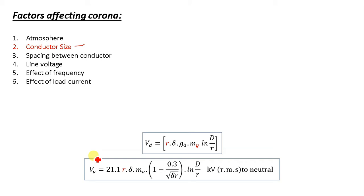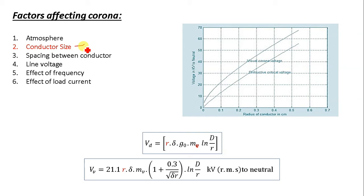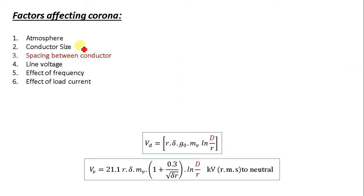In case of a stranded conductor — such as an ACSR conductor — the irregular surface leads to more corona than a solid conductor. As the radius of the conductor increases from 0 to 0.7, the voltage also increases. So corona depends on the diameter of the conductor as well as whether it is a stranded or solid conductor.